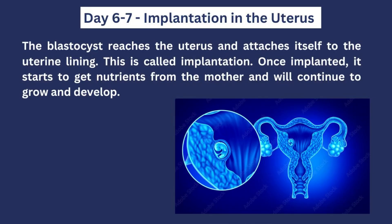By the end of day six to seven, there will be implantation in the uterus. That means the blastocyst will have reached the uterus and attached itself to the uterine lining — this is called implantation. Once implantation occurs, it starts to get its nutrients from the mother and will continue to grow and develop.